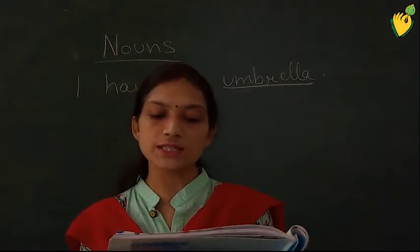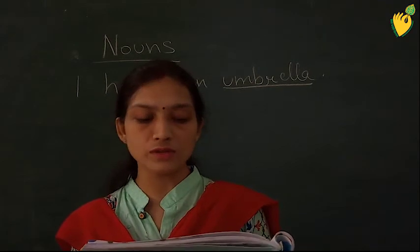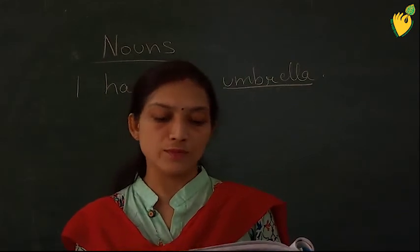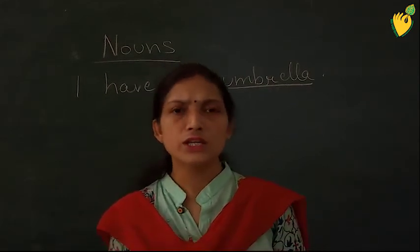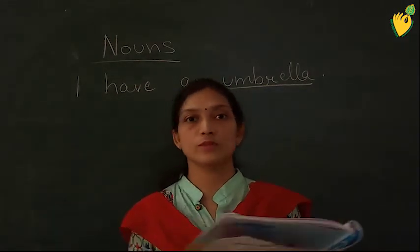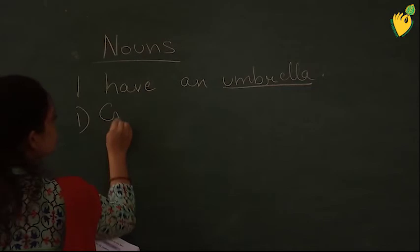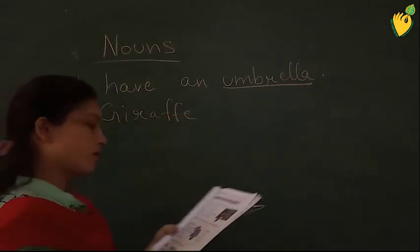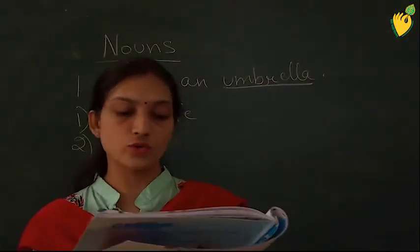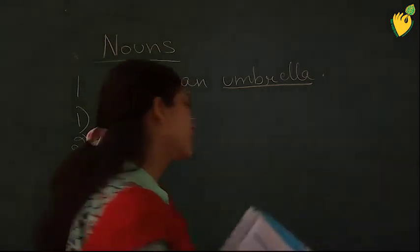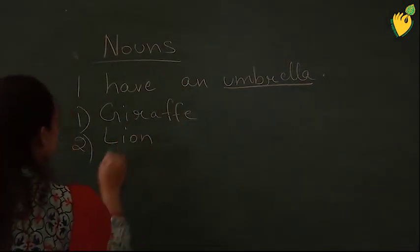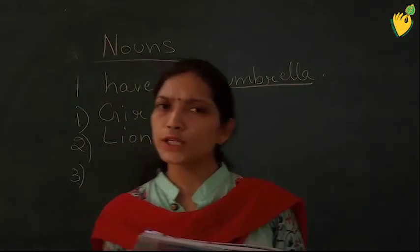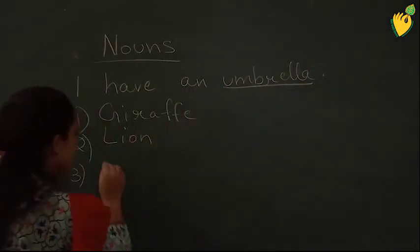Exercise B: read the riddles and write the names of the animals or birds. Some clues are given and you have to tell the names. 'I am the tallest animal.' — Giraffe is the tallest animal. Second: 'I am the king of the jungle.' — Lion is the king of the jungle. Third: 'I am the national bird of India.' — It is a peacock.